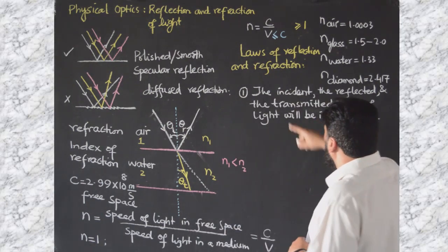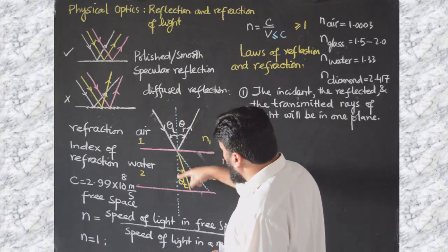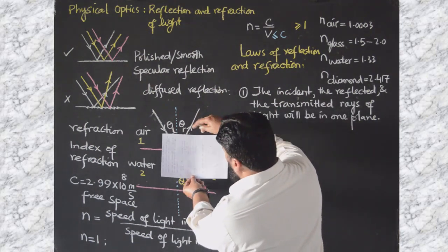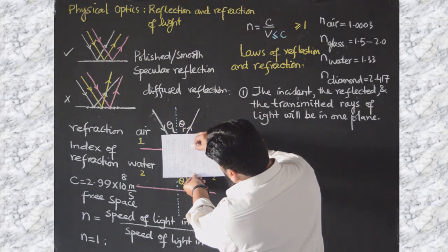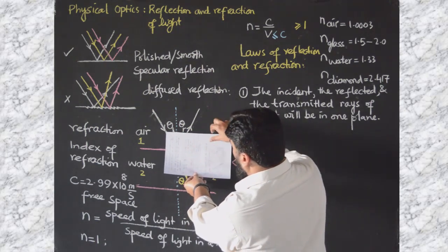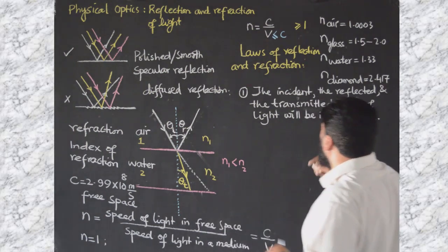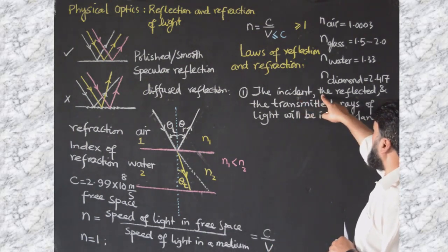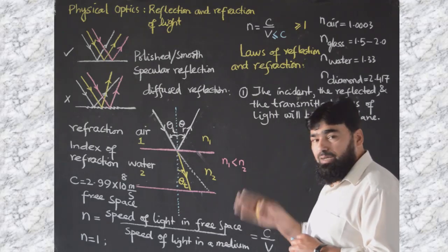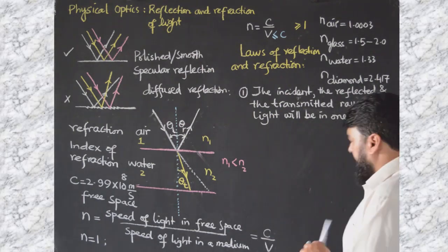This will be a single plane. The incident, the reflected, the transmitted, as well as the perpendicular line which we have drawn, will be in a single plane. For example, this page is a single plane, so the perpendicular line is also on this page, the incident on this page, the reflected on this page, and the transmitted on this page. It will not go this way or that way. This is the first law of reflection.